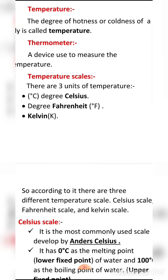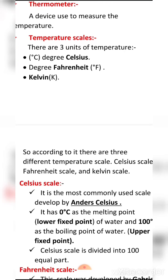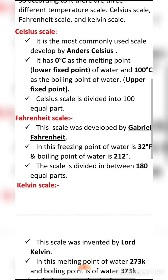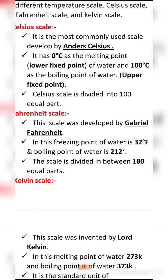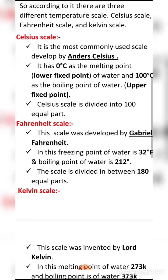According to the different temperature scales — Celsius scale, Fahrenheit scale, and Kelvin — first we will discuss the Celsius scale. It is the most commonly used scale. Whatever temperature we measure, mostly we say Celsius or centigrade. Celsius and Fahrenheit are the different units we use in our daily life.